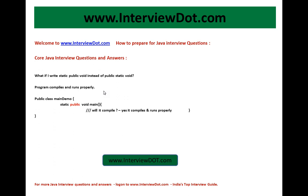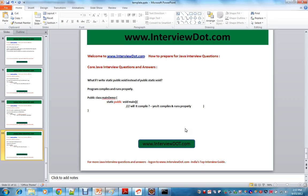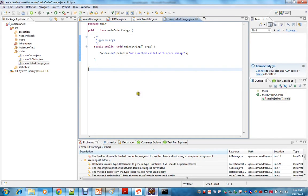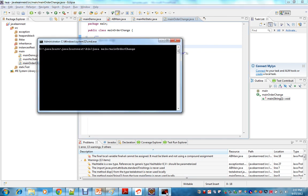Here I have given an example: instead of 'public static void main', I have written 'static public void main'. So will it compile? Yes, it compiles and runs properly. Let's see the example — here I've written a simple class with 'static public void main', just changing the order. Let's see whether it runs or not.